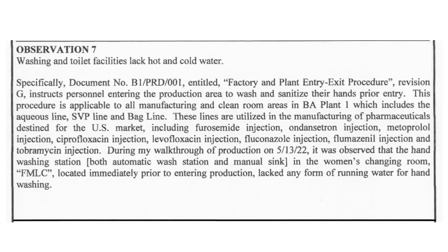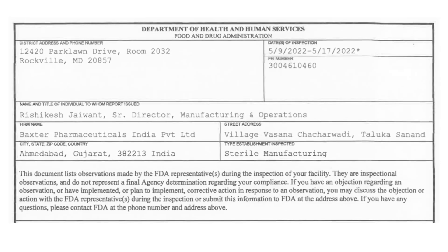Observation number seven: washing and toilet facilities lack cold and hot water. Auditors reviewed the SOP for the entry and exit procedure to the factory, which mentioned washing and sanitizing hands before entering the production area. During a production area visit on 13th May, auditors observed that in the women's washroom, water was not running for hand washing. This is the reason auditors issued this observation.